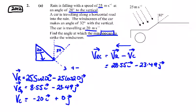So the angle is the tan of theta, and theta is equal to the inverse tan of 23.49 over 28.55. So theta is going to be 39.45 degrees.